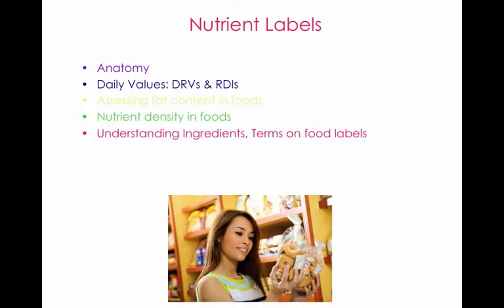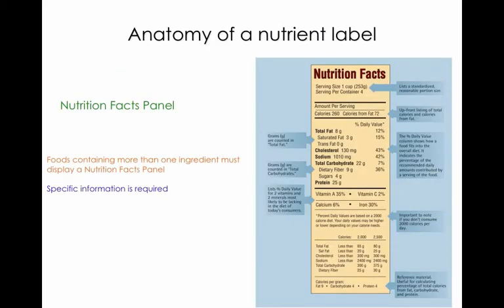Under nutrient labels we'll look at the anatomy of the food label, the daily values, how to assess fat content, nutrient density — I'll explain what that is if you're watching the calories in your diet, nutrient density is important — and we'll look at how the ingredients on the food label are listed, as well as some of the terms that can be found on food labels. I'm going over the nutrient facts panel that's usually found on the side of a box of cereal. Foods that contain more than one ingredient are required to display this panel, and there's specific information that's required.